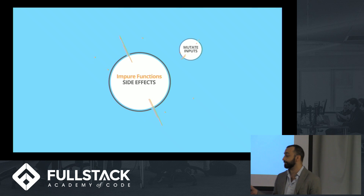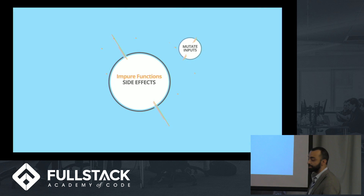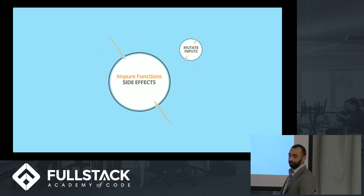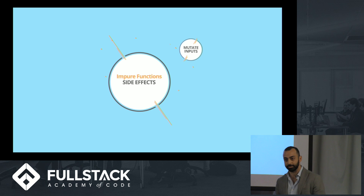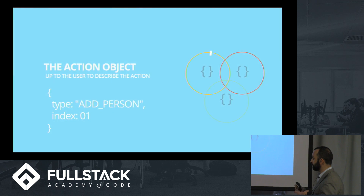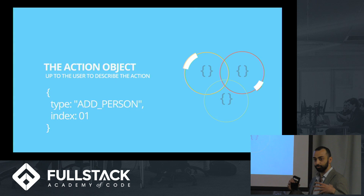In impure functions, the difference is they have side effects — they might mutate the input coming in or make a network call. They make it very difficult to determine an output that's consistently the same. So one of the biggest things we try to do in Redux is create everything with a functional basis, knowing the same input is going to create the same output.